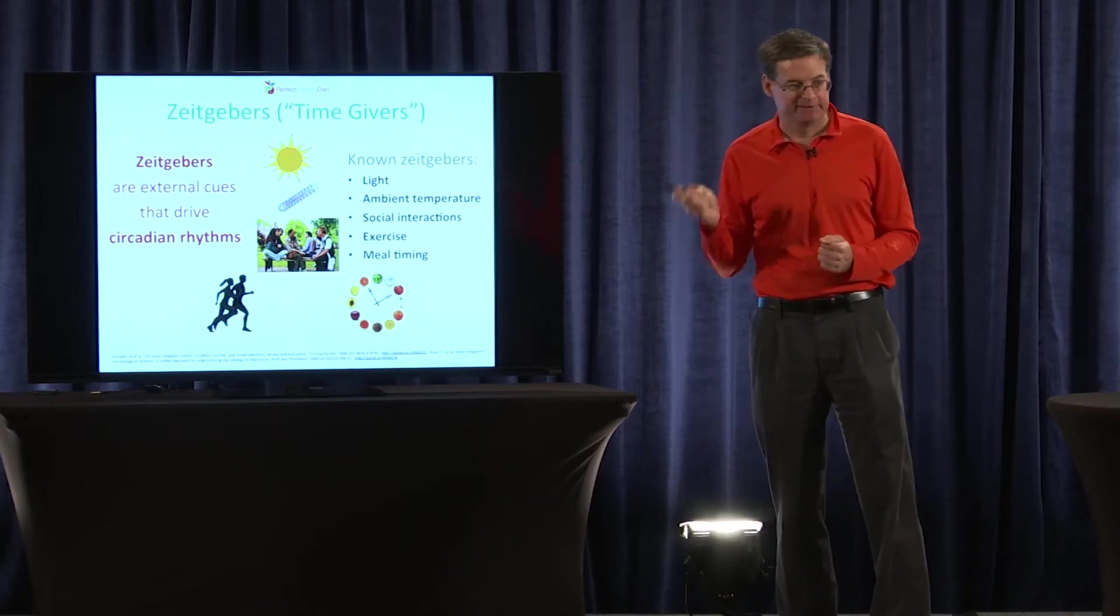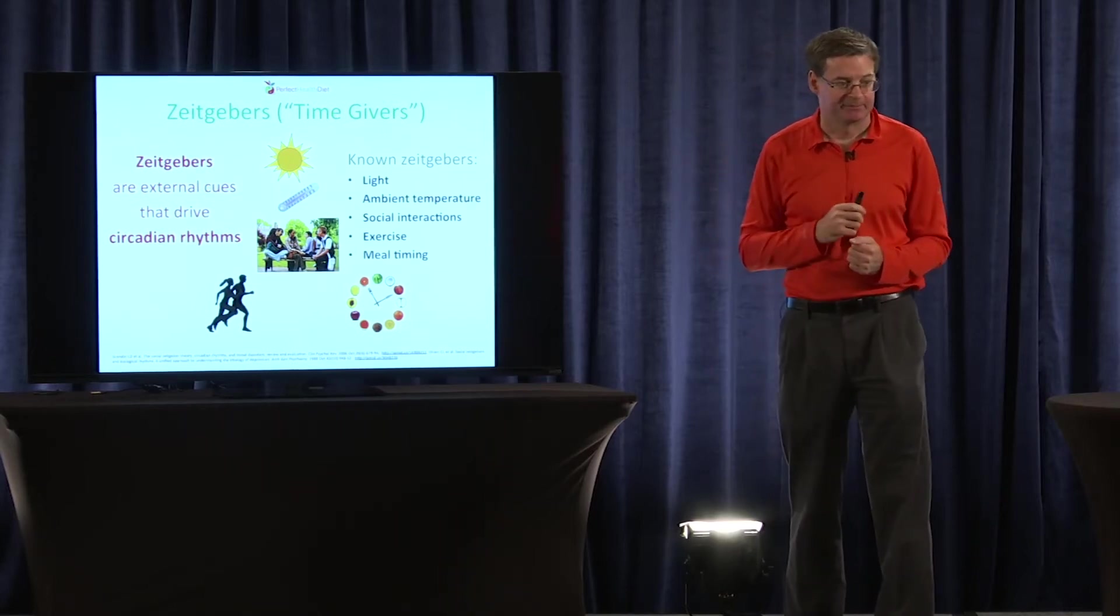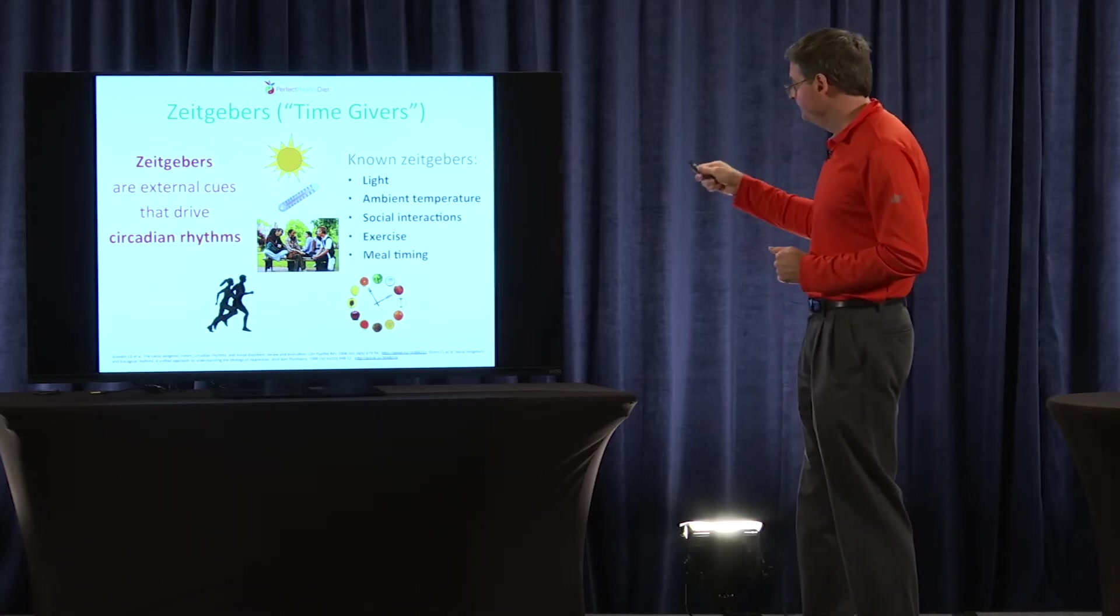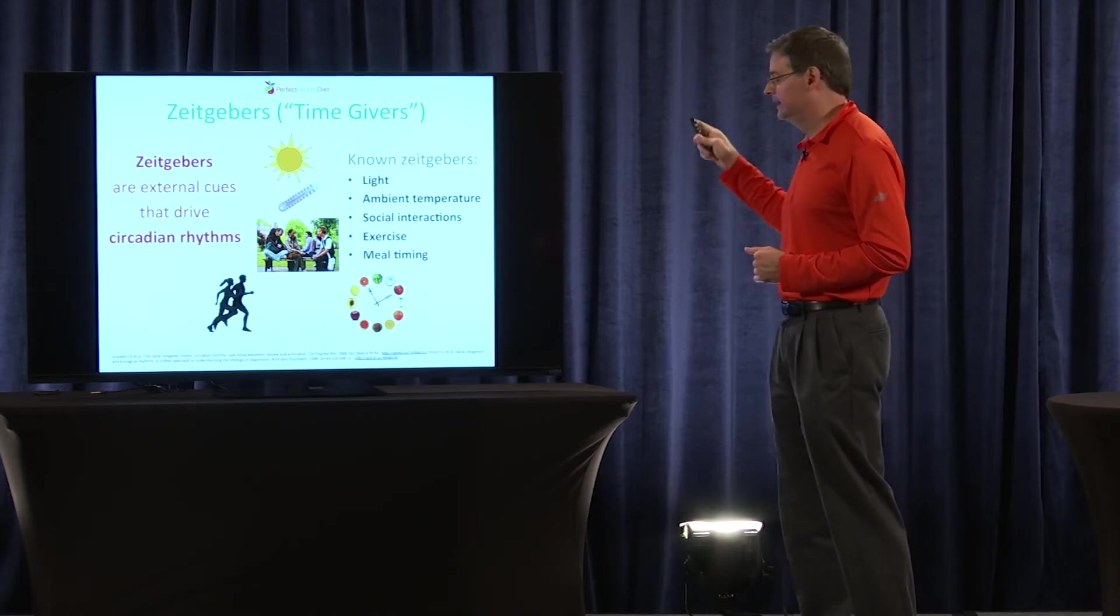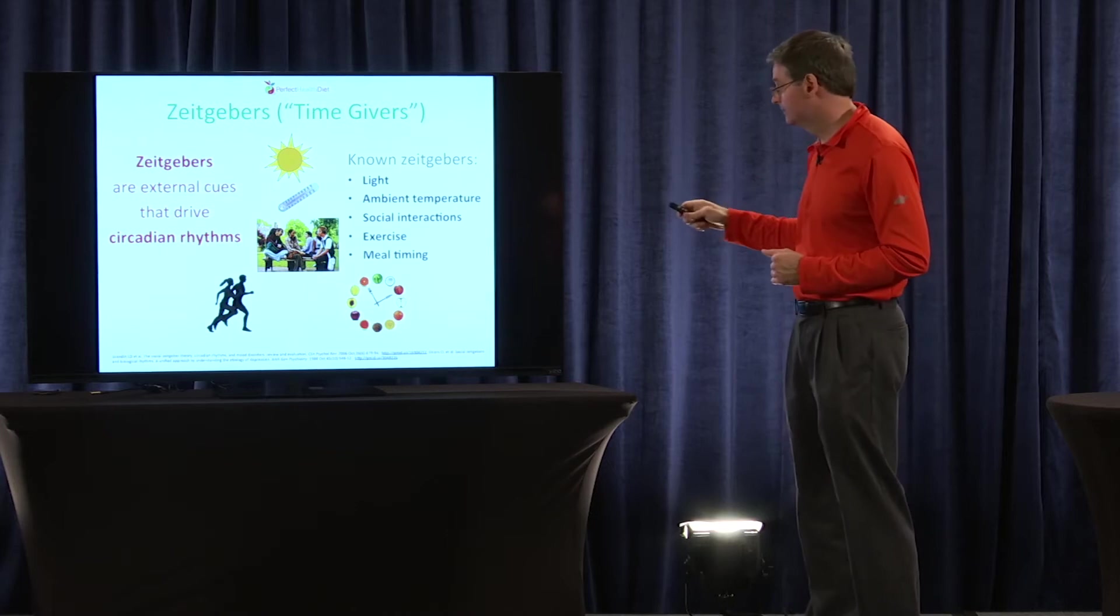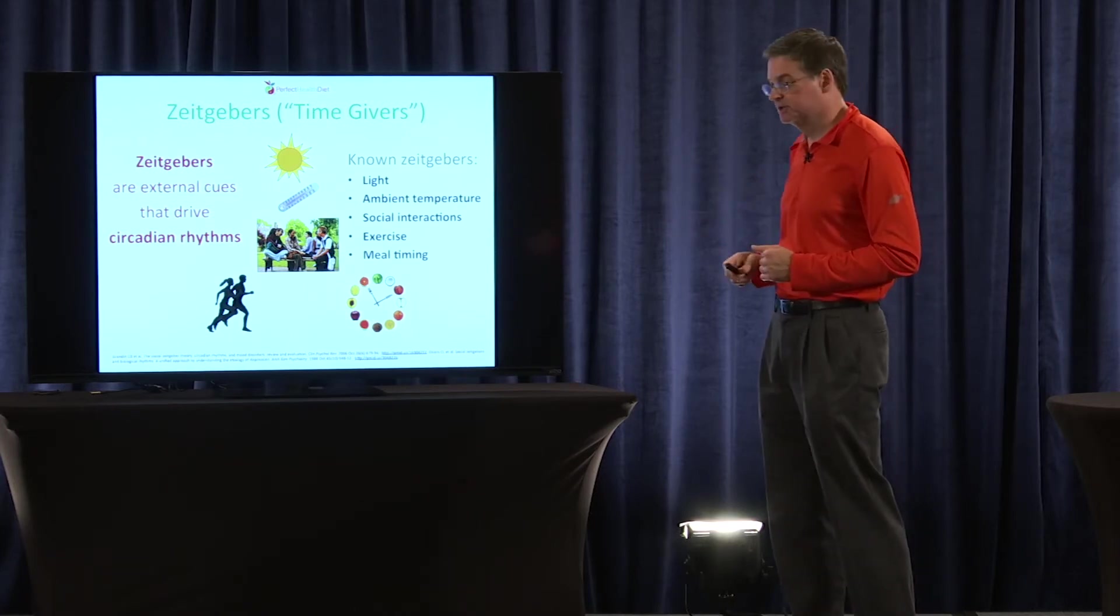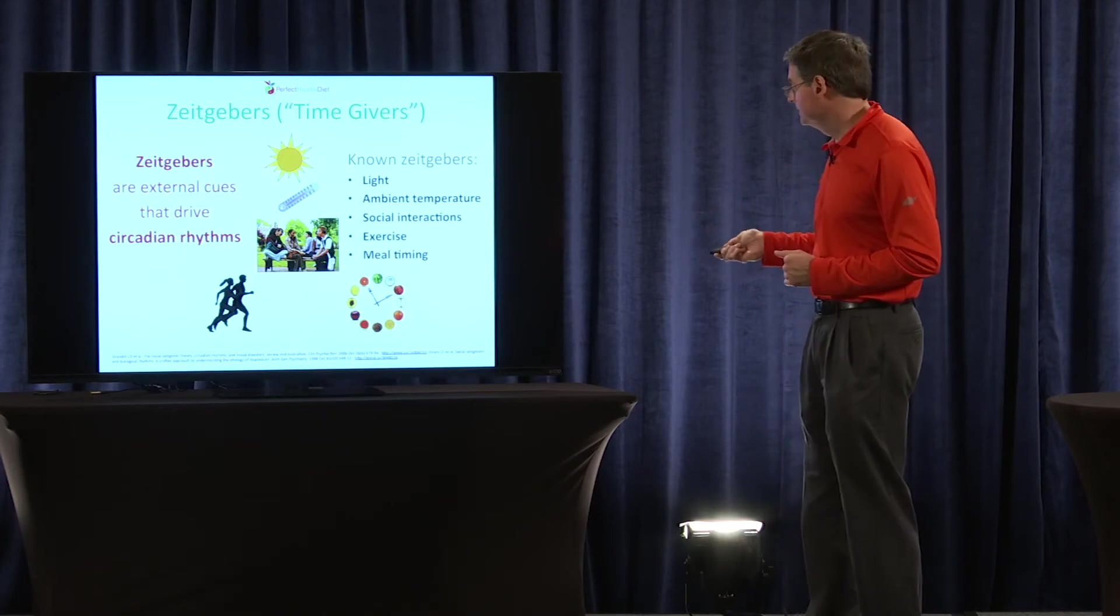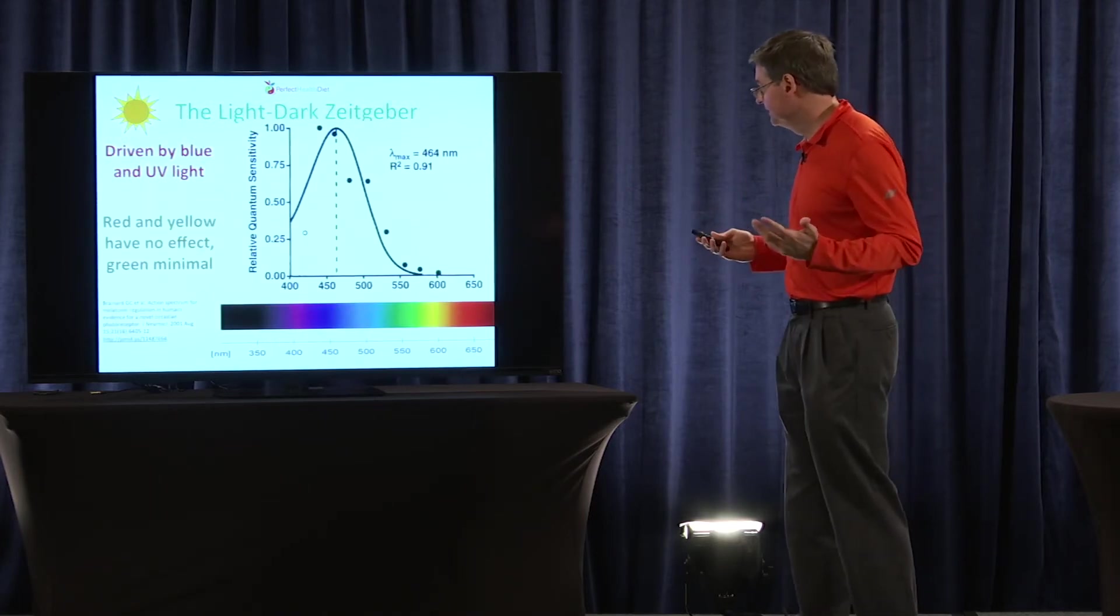How do we give time to those clocks? How do we get all the clocks ticking and all of them synchronized? Well, there are five main ways: one is light exposure, one is exposure to ambient temperature, one is through social interactions, one through exercise, one through meal timing. So let me talk a little bit more about each of those.